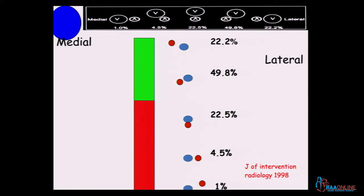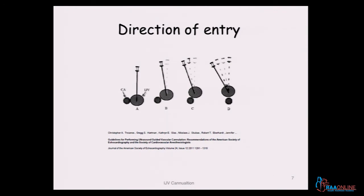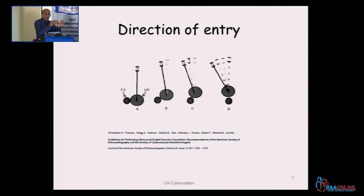Then in 1% it is posterior medial. So the direction of your needle is important depending upon the anatomical relationship between the vein and the artery. If it's exactly lateral you can simply go like this, but if it is anterolateral you will have to tilt it laterally.